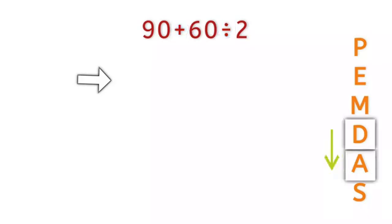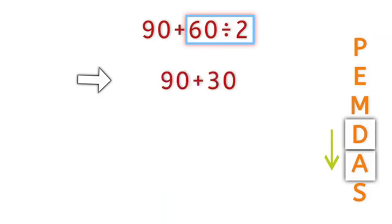So first we perform division. Focus on 60 divided by 2. It can be written as 30. Now the expression becomes 90 plus 30, which equals 120.